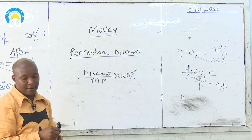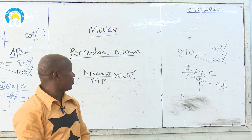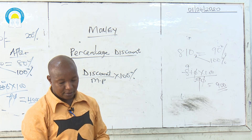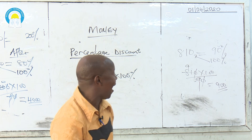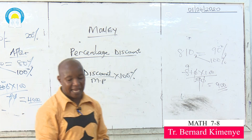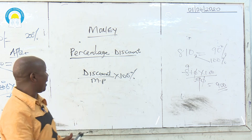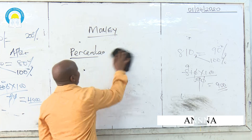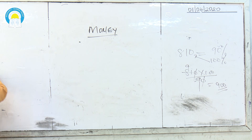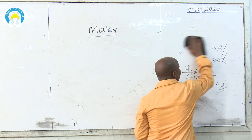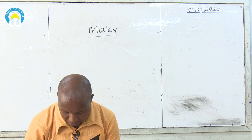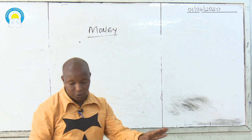Before I wind up the subtopic of percentage discount, go and solve all the problems pertaining to percentage discount which have been tested from 1985 to 2019. That's your assignment during this time of the corona era. Go back and revise all the past questions concerning that topic. Now let me go to another subtopic still on money, which is about commission — an area that is very common in exams and which is highly misunderstood by many students countrywide.